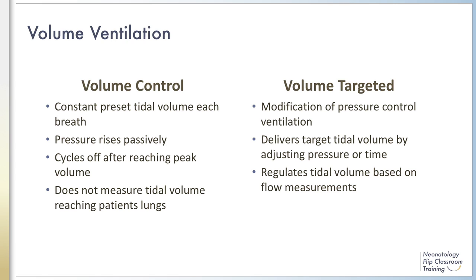In contrast, volume targeted ventilation is actually a modification of pressure control ventilation using a flow sensor to measure tidal volume at the proximal airway. Volume targeted ventilation is designed to deliver a targeted tidal volume by adjusting the ventilator pressure and time. These devices regulate tidal volume based on the measurement of gas flow rate — the higher the flow rate, the shorter the inspiratory time. Flow and thus tidal volume can be measured either during inhalation or exhalation.